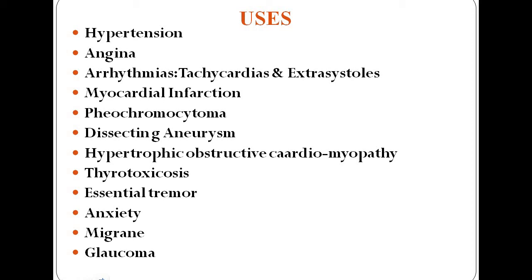If beta blockers are given before a cardiac event it is called primary prophylaxis, and if given after a cardiac event it is called secondary prophylaxis. They are also used in pheochromocytoma and in dissecting aneurysm, where their role is only until surgery is performed to limit the size of damage. They are also used in hypertrophic cardiomyopathy.